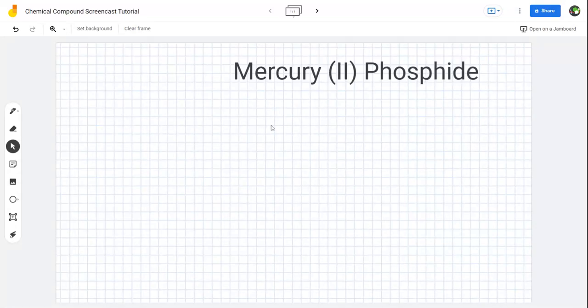The chemical formula that I'm going to show you how to write is mercury-2-phosphide. Here's its chemical name.